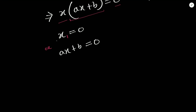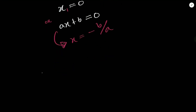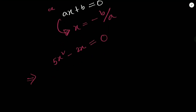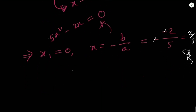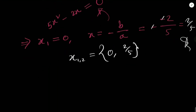For this condition where c = 0, one solution is always x = 0 and the other is x = -b/a. For example, for 5x² - 2x = 0, one solution is x = 0, and the other is x = -(-2)/5 = 2/5. So x1, x2 = 0 and 2/5. This is a much easier and shorter way to calculate.